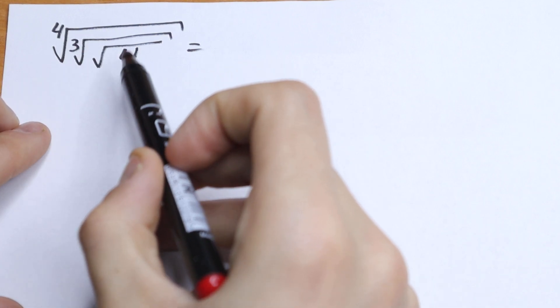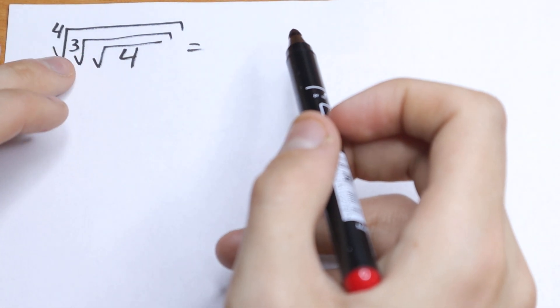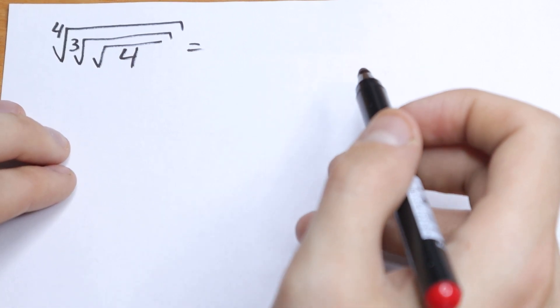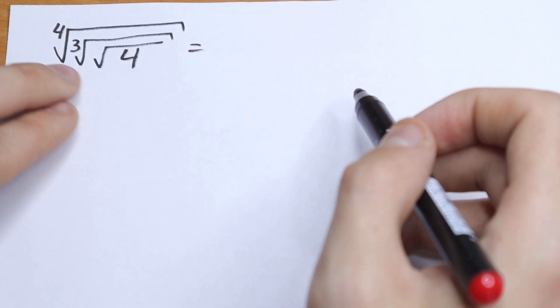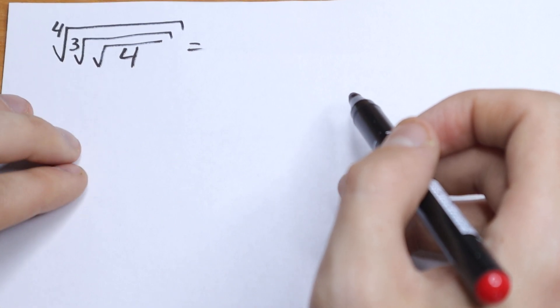We have 4th root of cube root of square root of 4, three roots right here. How can you solve it? I want to suggest a really good approach to solve this question with radicals.